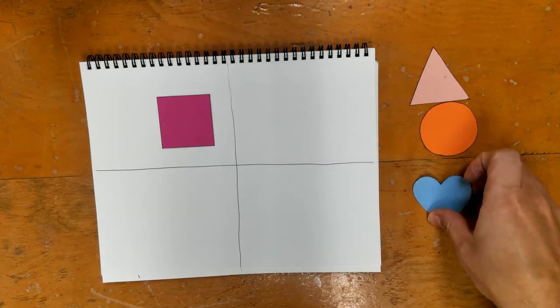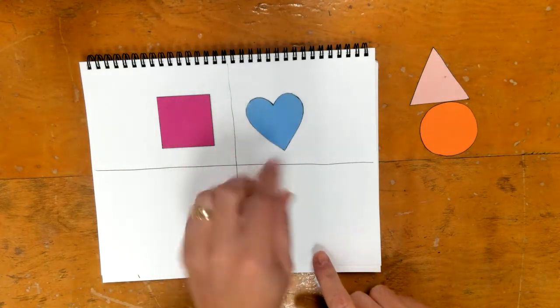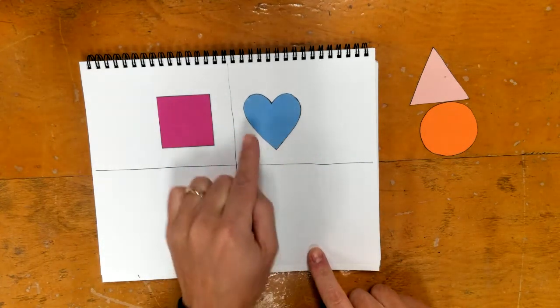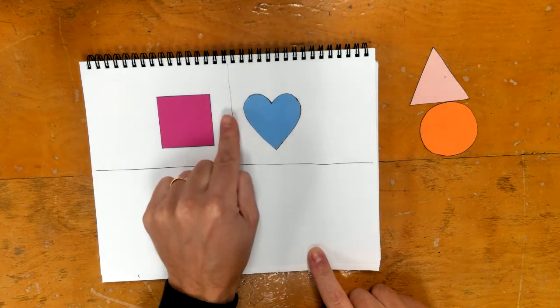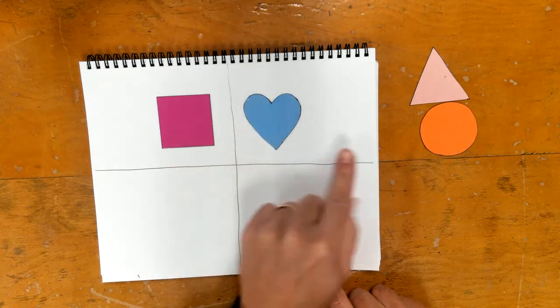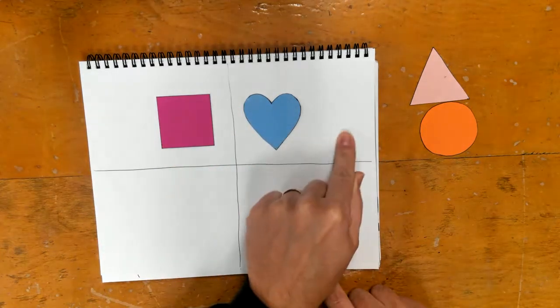Then I'm going to take my heart. I'm going to put my heart like this where it's again close to that line but there's still a space. But there's a lot of space over here.